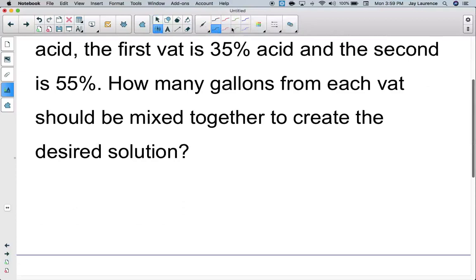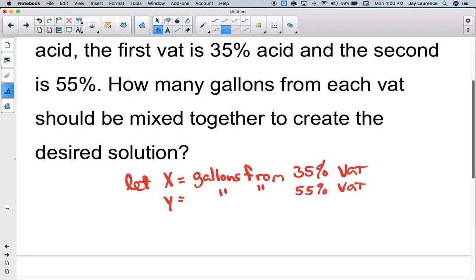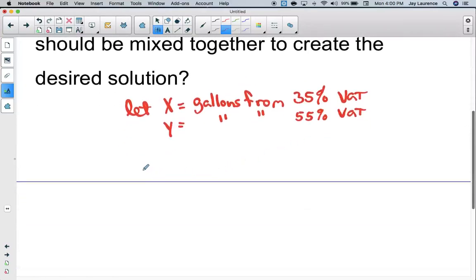Let X equal the gallons from 35% vat. A vat is just a big storage container. And Y is going to be the gallons from the 55% vat. Now I should be able to write my equation. The story tells me that she needs 300 gallons of this mixture. So my first equation is simple: X plus Y equals 300.